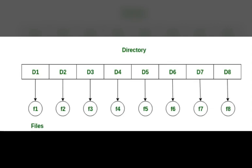Since all files are in the same directory, all files in a single level directory must have unique names. If two users call their data set 'test,' then the unique name rule is violated.